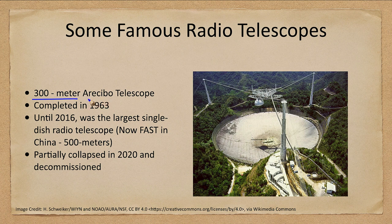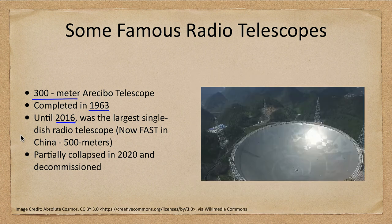There was also the 300-meter Arecibo telescope — three times larger than the Green Bank — completed in 1963. Until 2016 it was the largest single dish at 300 meters across. We now have an even larger telescope, the FAST telescope in China, which is similar in structure but much larger, almost twice as big.